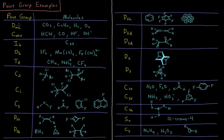So we'll start with the linear groups, D-infinity-H and C-infinity-V. Things like homonuclear diatomics are D-infinity-H, H2 and O2. Also things like CO2, where the carbon is a central atom, and acetylene, C2H2, or ethyne. Those are all D-infinity-H.